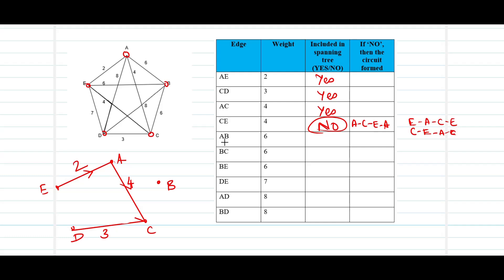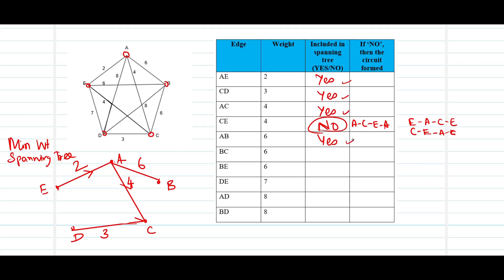Three edges have been added so far. Now I add the fourth edge AB, which equals 6. We draw the line from A to B with weight 6. Does it form a circuit with any of the existing edges? No. So yes, we add this. Now we have the required number of four edges, which gives us a tree. Every vertex is connected and there is no circuit, so the generated graph is our minimum weighted spanning tree.